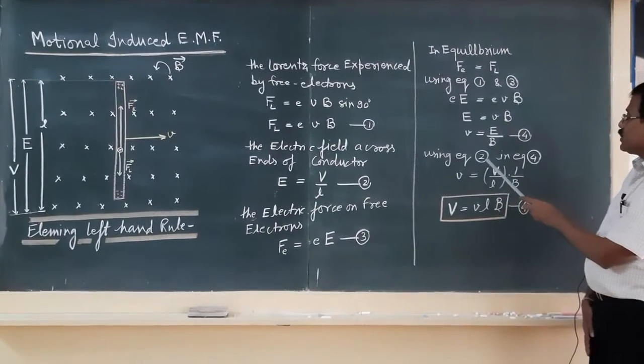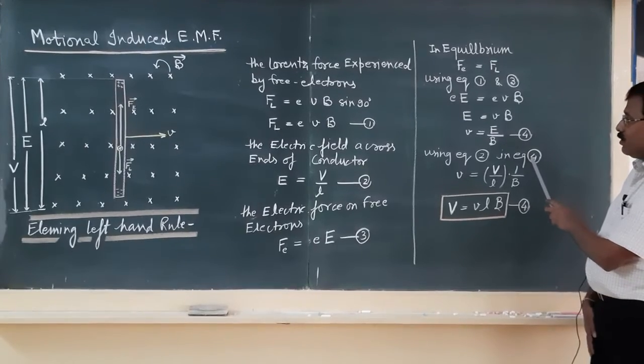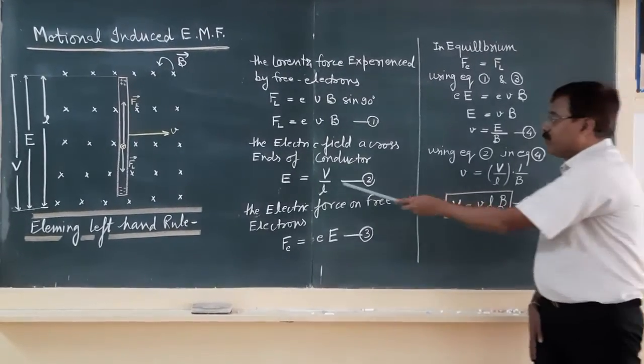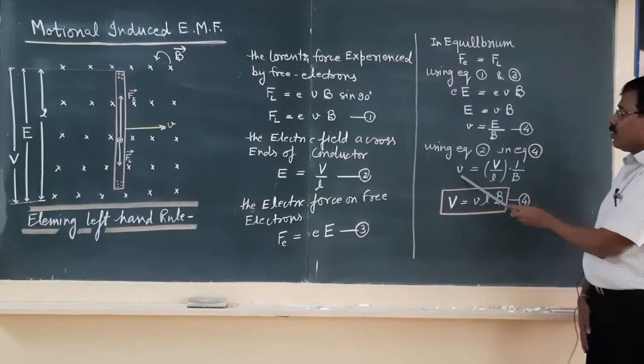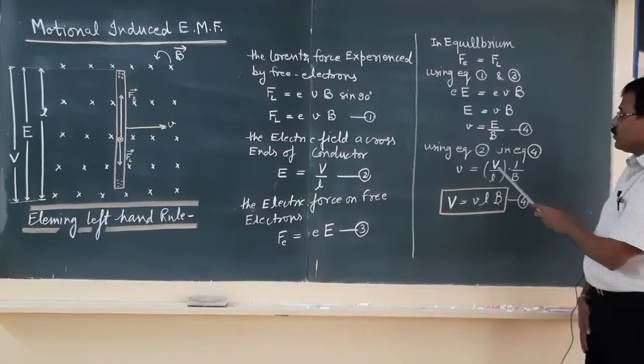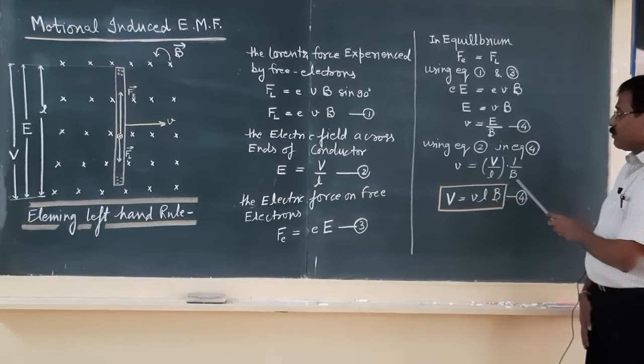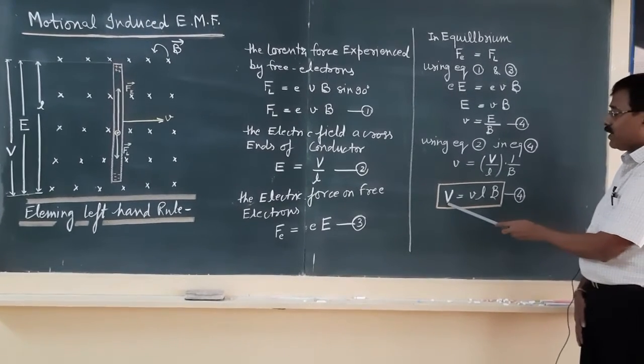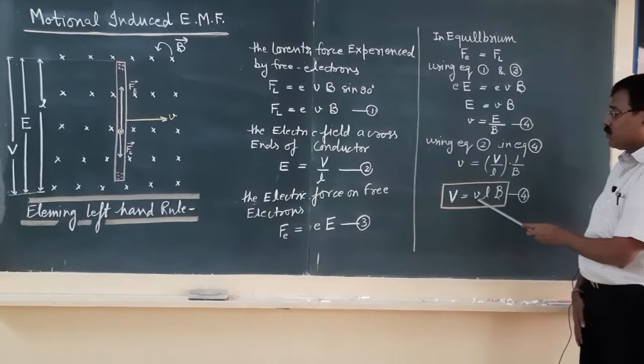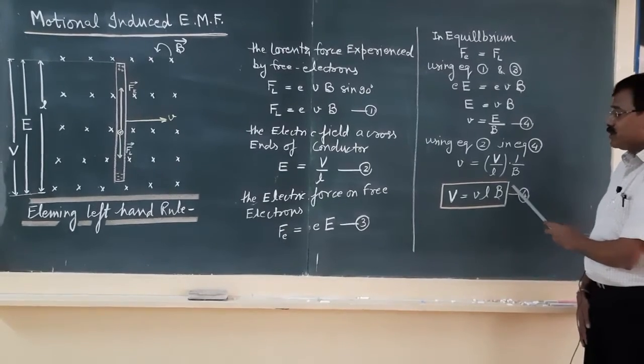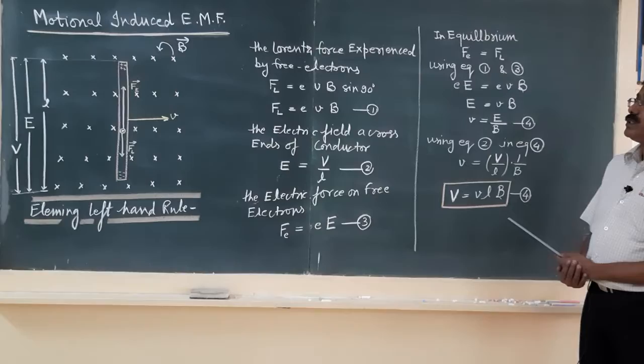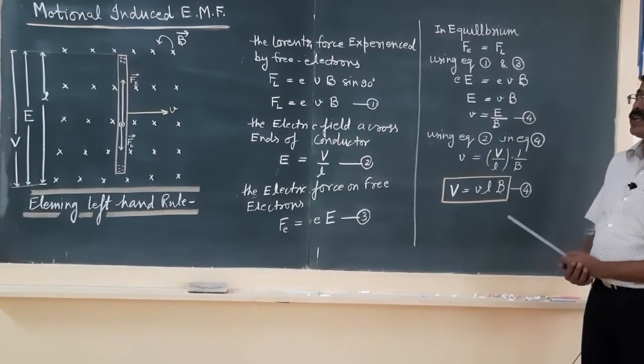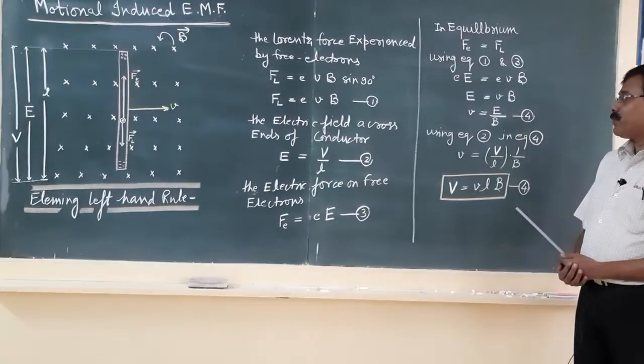If you use equation 2 in equation number 4, it means you have to put the value of E in equation number 4. Then small v, that is the velocity, is equal to V by L into 1 by B. That is finally, capital V equals vLB. So, this is a very important mathematical formula for induced EMF when the conductor is moving in a uniform magnetic field.